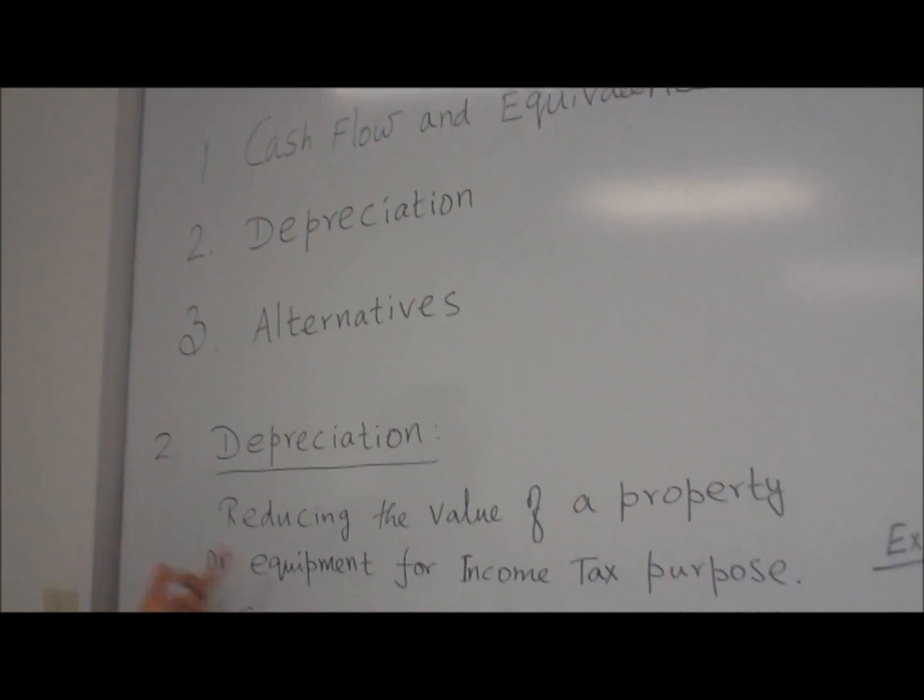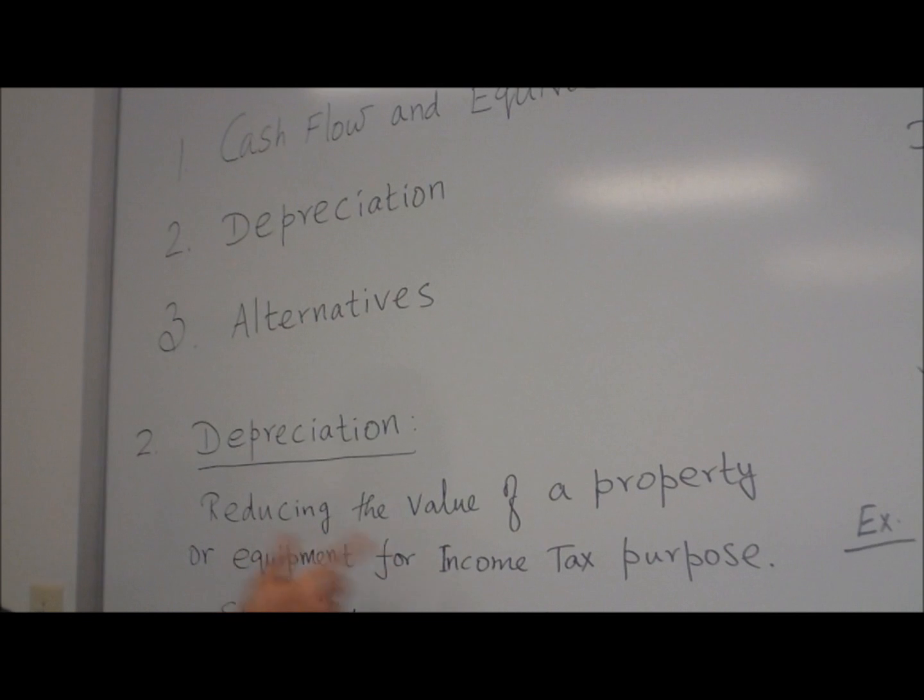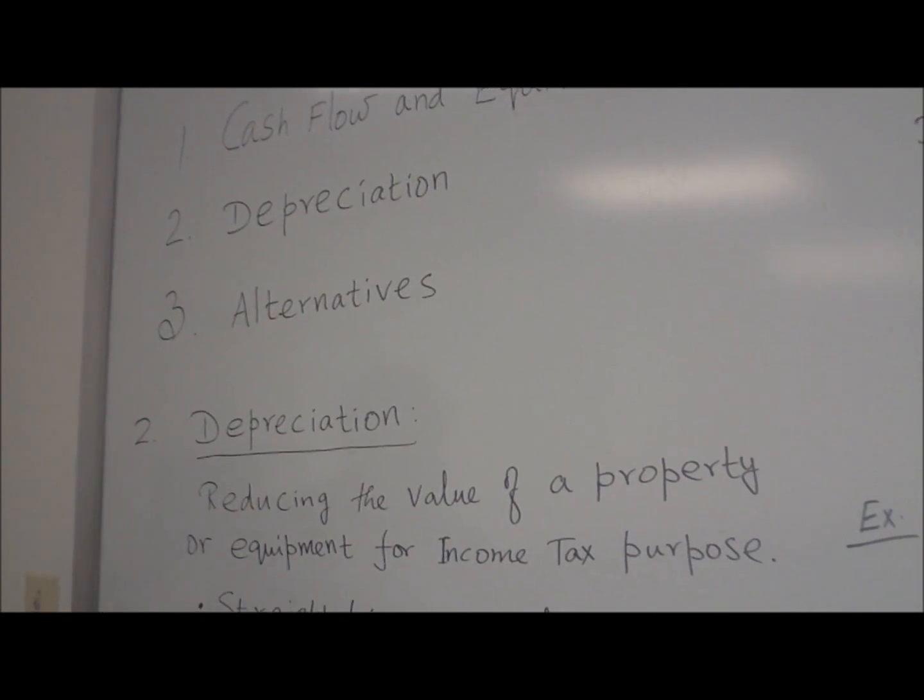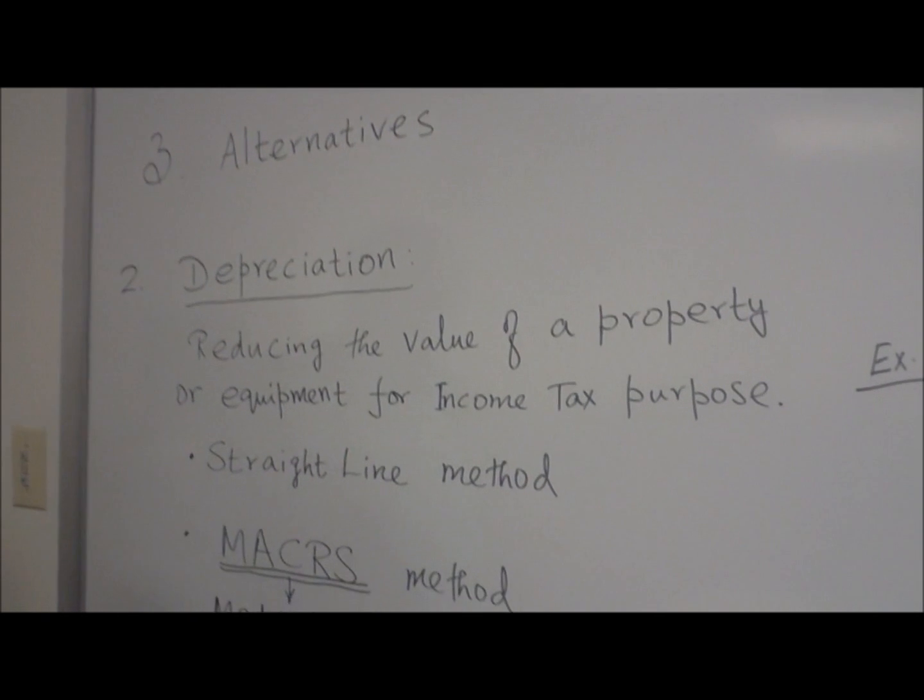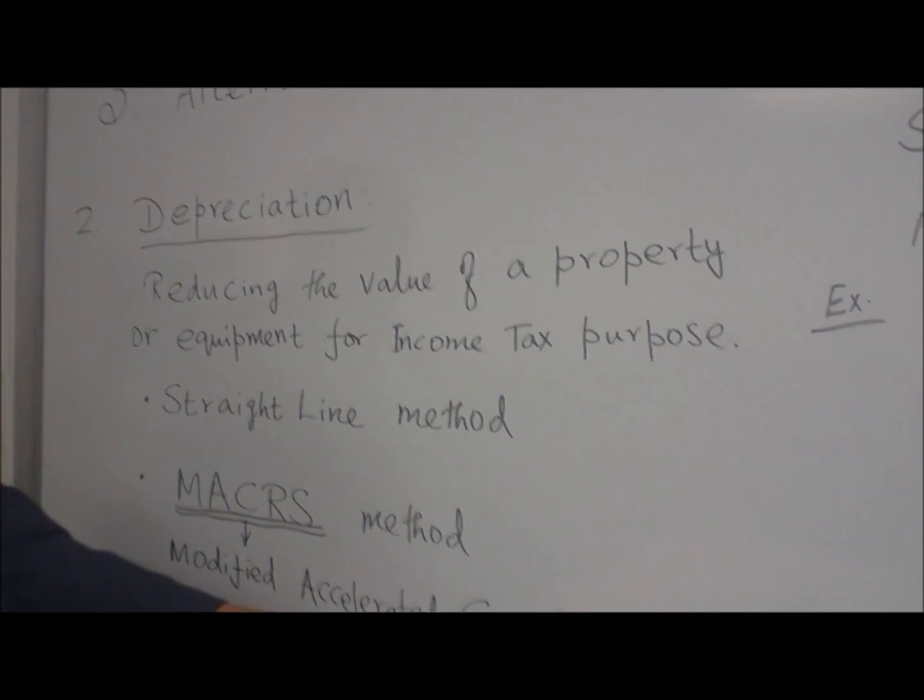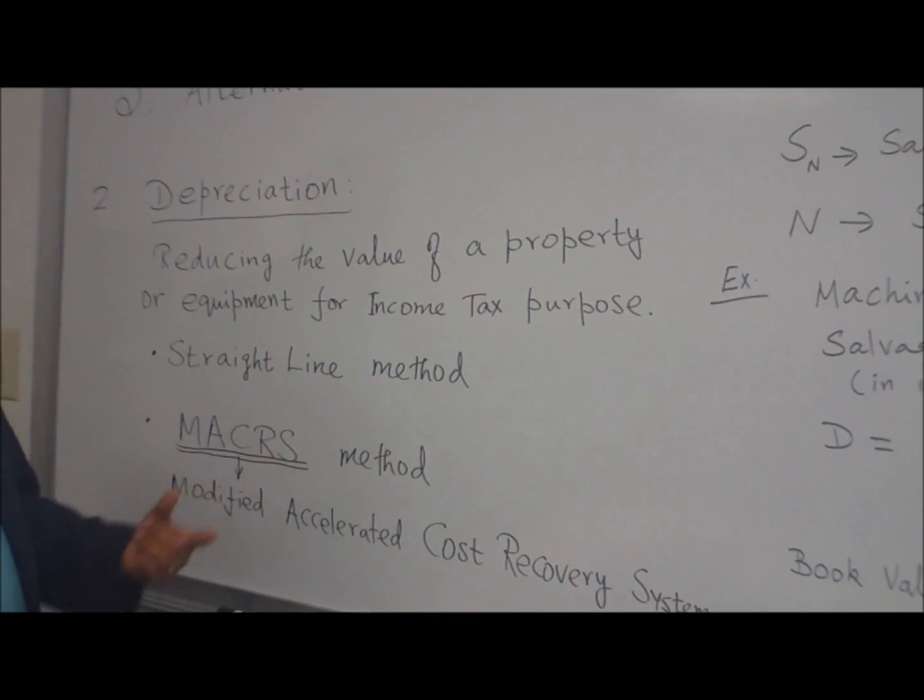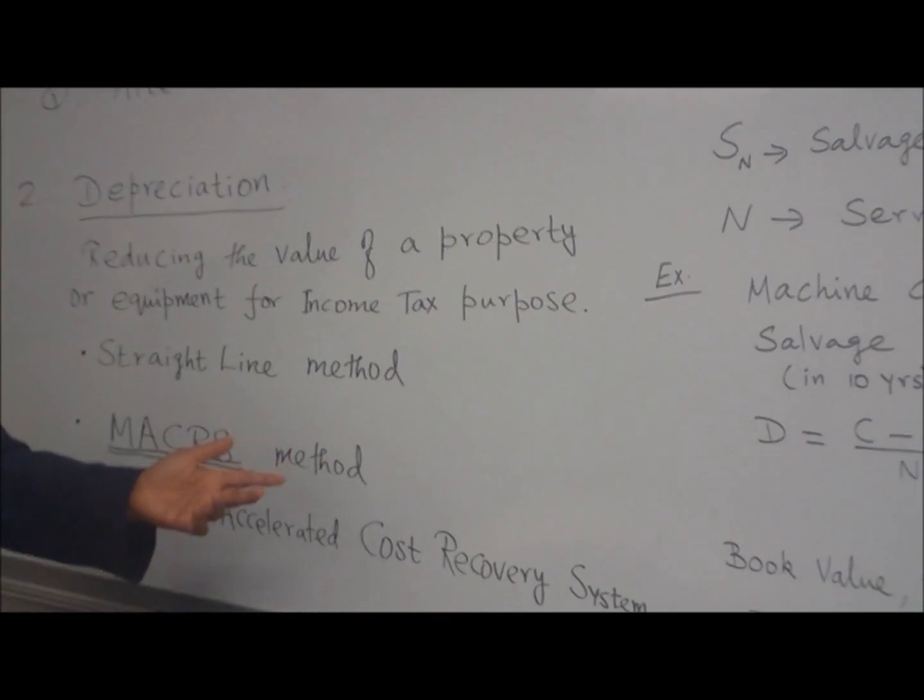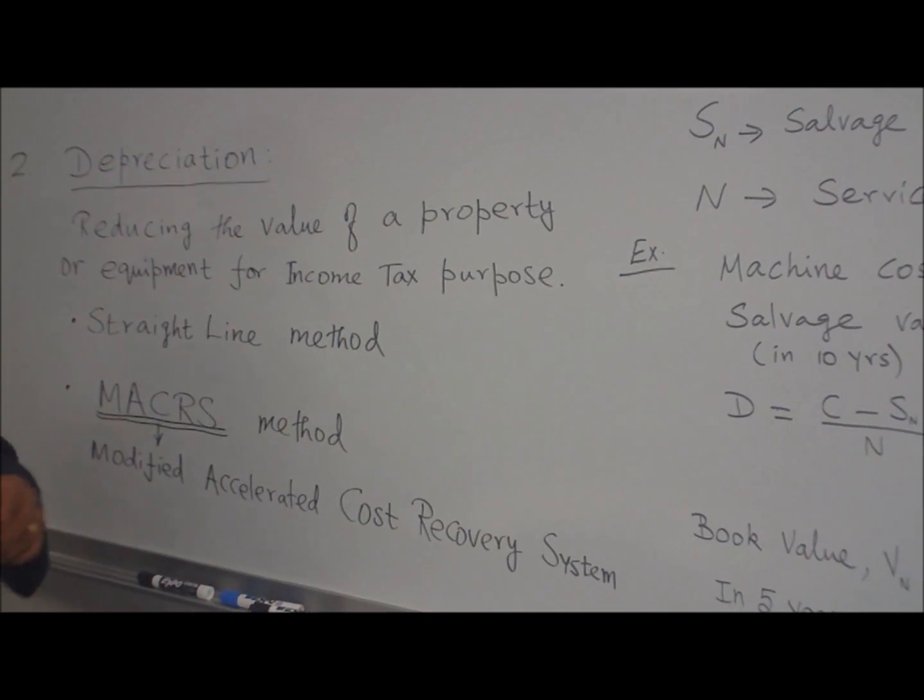Depreciation: What is depreciation? You are reducing the value of your property or equipment for income tax purposes. There are two methods: Straight Line Method and MACRS Method. MACRS is the Modified Accelerated Cost Recovery System. This method is recommended by the IRS, Internal Revenue Service, for income tax purposes.